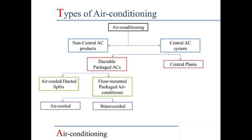Now let's look at central AC systems. Central AC systems are divided into two types: ductable packaged ACs and central plants. Ductable packaged ACs are further divided into air-cooled duct split AC and floor mounted packaged AC. Floor mounted packaged ACs are divided into air-cooled and water-cooled.